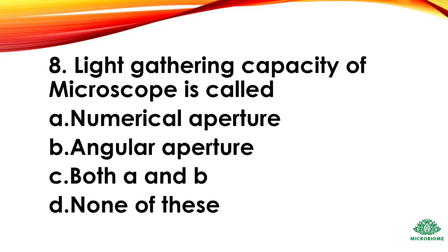Question 8: Light gathering capacity of a microscope is called — options: numerical aperture, angular aperture, both A and B, none of these. The right answer: option A, numerical aperture.